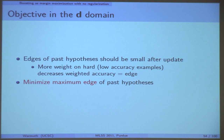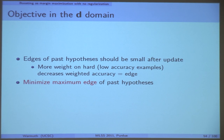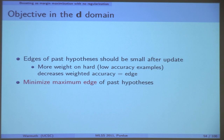Intuitively, what you want is the edges of the past hypotheses should be small after the update. You want to suck all the information out of the weak hypotheses you have so far, and make them not have an edge anymore. You put more weight on the hard examples, toward the minus, which decreases the weighted accuracy of the past hypotheses — their edge. The objective is you minimize the maximum edge.